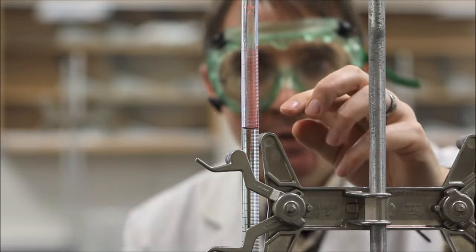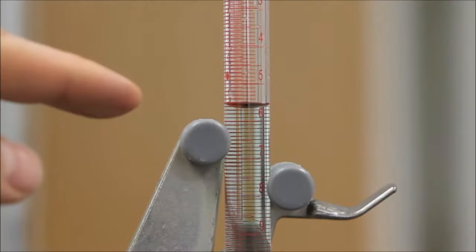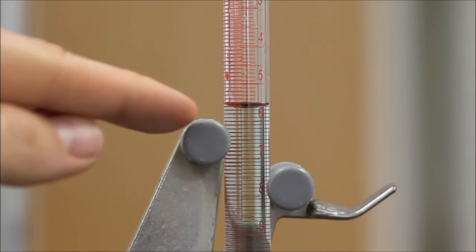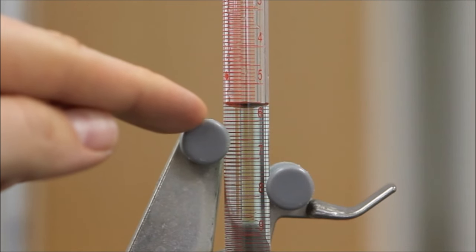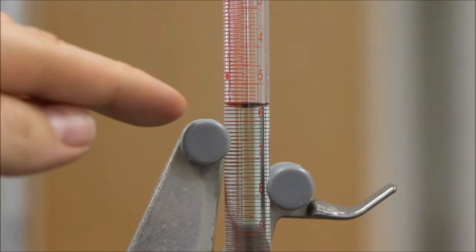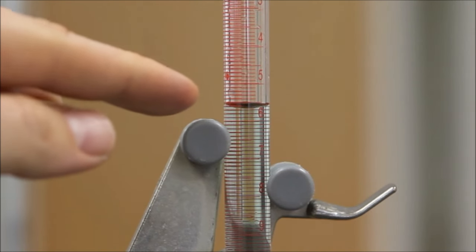We are now ready to read the initial volume of the burette. First, position yourself such that you are eye-level with the meniscus to avoid parallax error. We see that the meniscus is between 5 and 6 milliliters. Further, it is between 5.6 and 5.7 milliliter marks, and finally, estimating to the hundredths place, I record the initial volume as 5.67 milliliters.